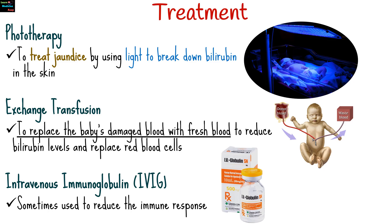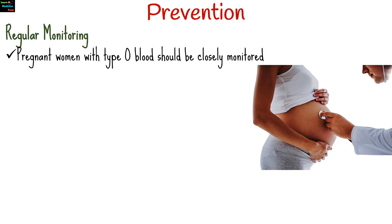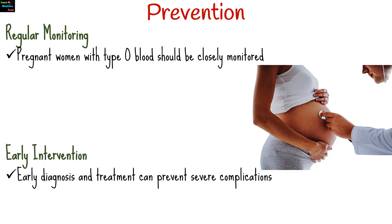Prevention strategies include regular monitoring of pregnant women with type O blood. Early diagnosis and treatment can prevent severe complications.